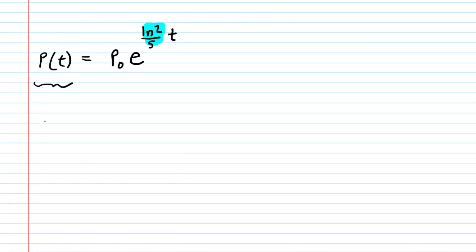For P(t), we will substitute in 4 times the initial population. You could probably pause the video here and try to solve for t on your own. Same process. You'll cancel out the P₀s. Next, you'll take the natural log of both sides, and then you'll divide both sides by that ln(2)/5.